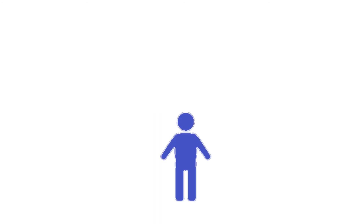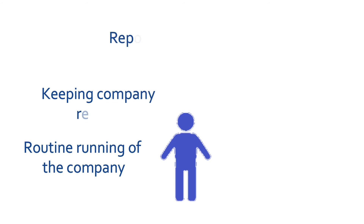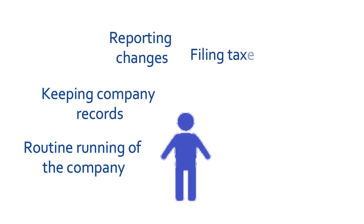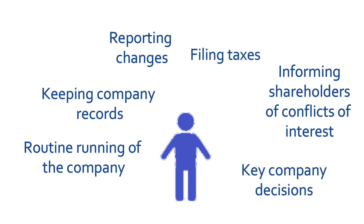Directors: there should be at least one director in the company. They will help with the general everyday running of the company and are responsible for keeping company records, reporting changes, filing the company's accounts, paying taxes, and informing shareholders if the director personally will benefit from any transaction. Directors also make key company decisions.